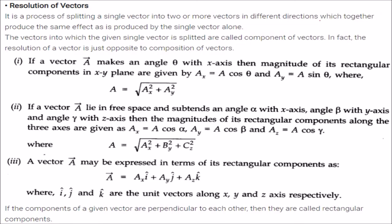Resolution of a vector: if vector A makes angle θ with the x-axis, its component along x is A cosθ and along y is A sinθ. The process of splitting a single vector into two or more components in different directions that together produce the same effect is called resolution. These components are the rectangular components of the vector. Resolution is the opposite of composition of vectors.